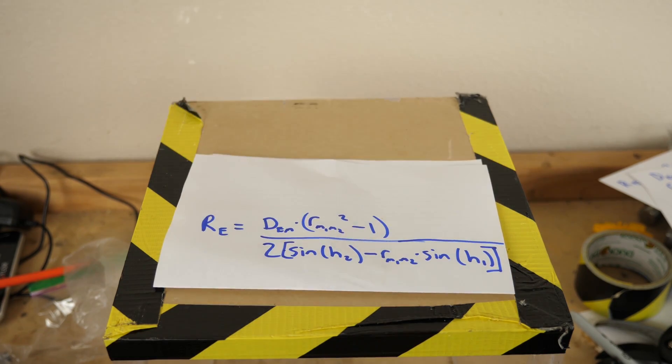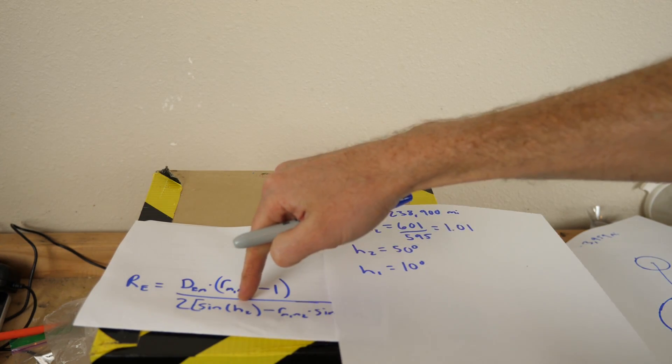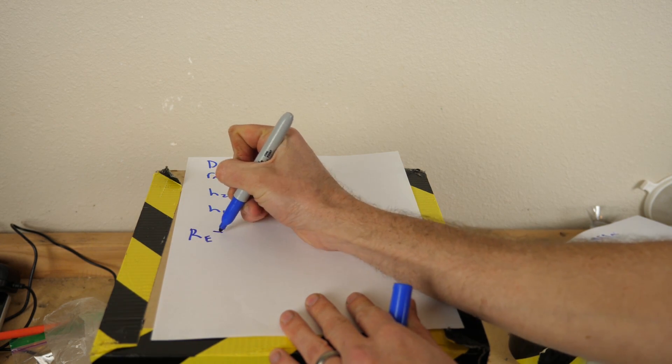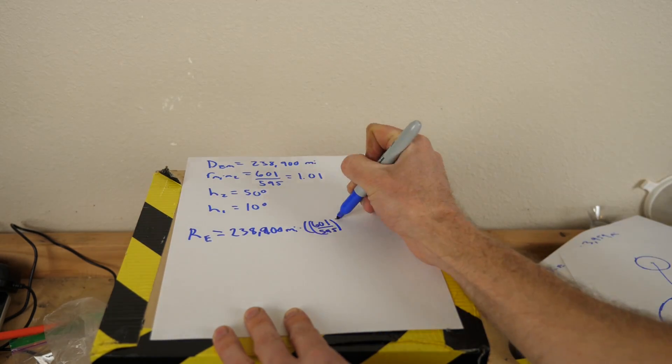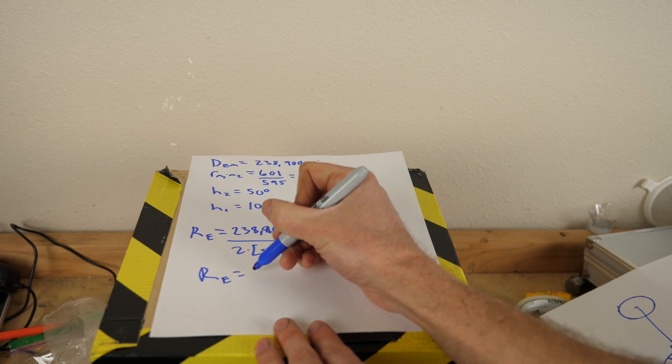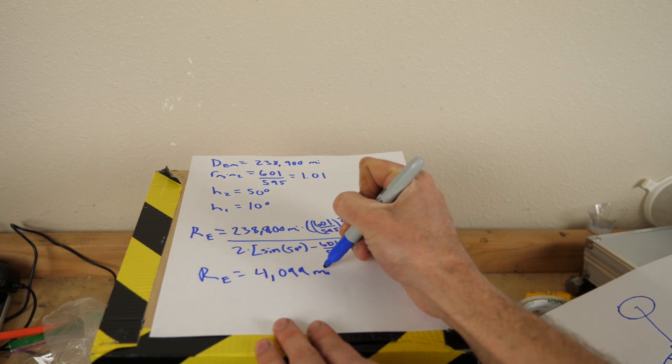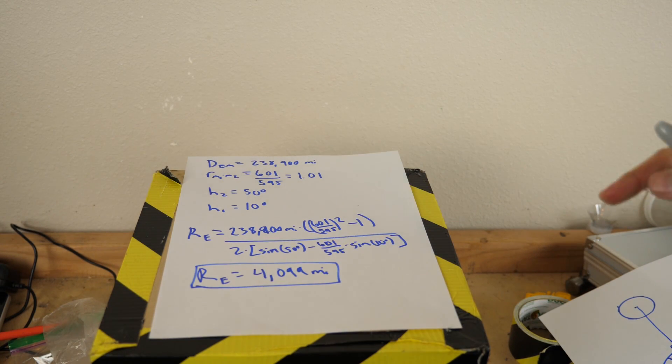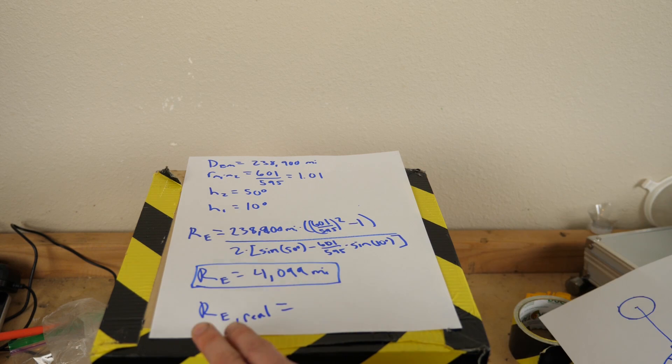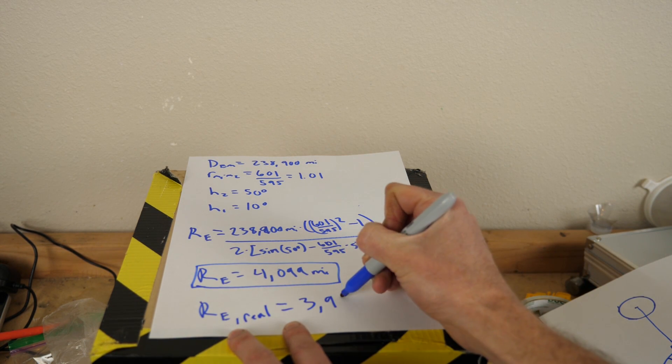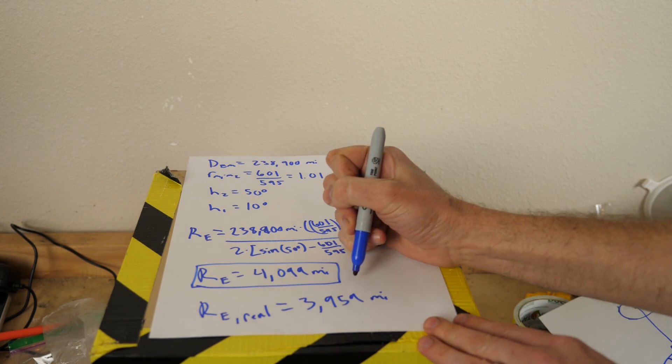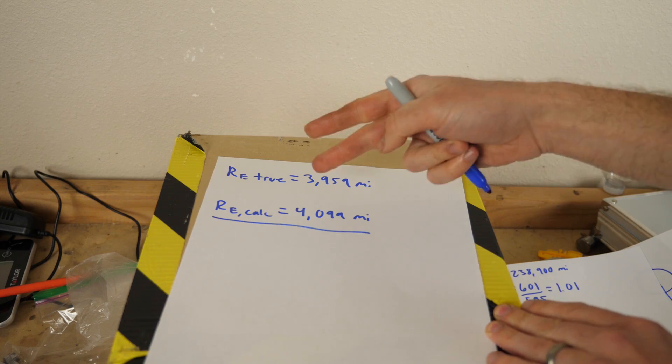And then I plug all this in and calculate the radius of the earth. Okay now we just plug these values into the equation and let's see what we get for the radius of the earth. Okay so I get that the radius of the earth equals, plug all that in I get that the radius of the earth is 4099 miles. Now that is pretty darn close. Do you know what the real radius of the earth is? The radius of the earth, the real radius is 3959 miles.